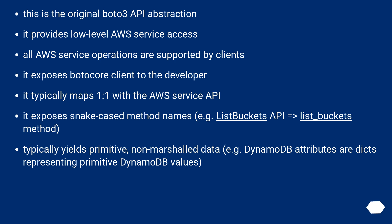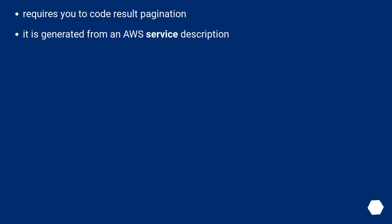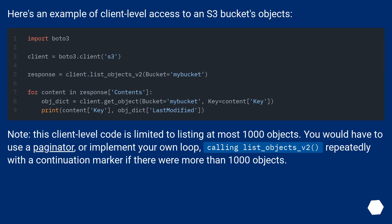It typically yields primitive, non-marshaled data — for example, DynamoDB attributes are dicts representing primitive DynamoDB values. It requires you to code result pagination yourself. It is generated from an AWS service description. Here's an example of client-level access to an S3 bucket's objects. Note: this client-level code is limited to listing at most 1000 objects. You would have to use a paginator or implement your own loop, calling list_objects_v2 repeatedly with a continuation marker if there were more than 1000 objects.